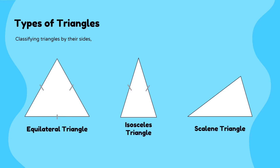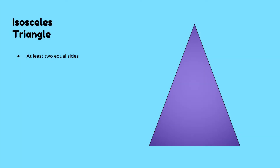We are going to do one together and then I want you to do the other two on your own. By their sides, there are three types of triangles: equilateral, isosceles, and scalene. An isosceles triangle has at least two equal sides. We call them its legs. Just by looking, we realize that it has one line of symmetry that runs through its vertex. There is no other line about which any part of the triangle is perfectly mirrored on the next side.